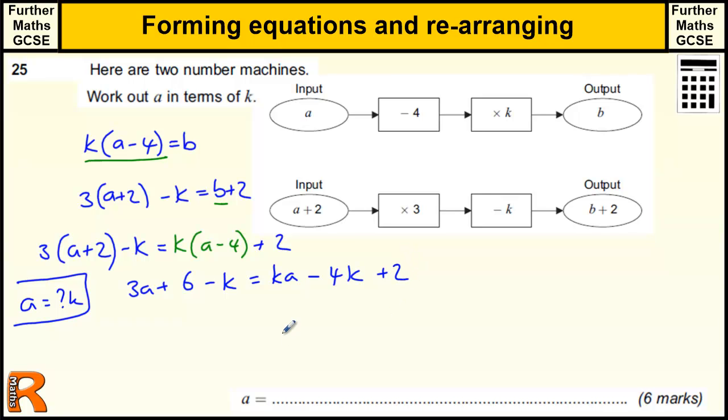So if we bring the a's to the left-hand side, we've got 3a take away this ka. Now I'll leave this stuff here to start with and we'll move that away to the other side in a second. So we've still got the minus 4k, because I took the ka over to this side, we've got minus 4k and plus 2.